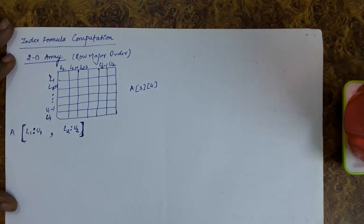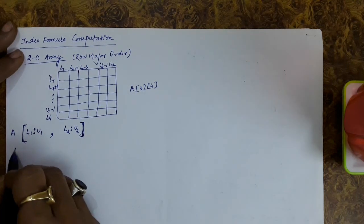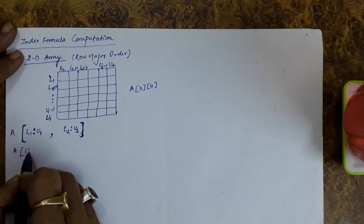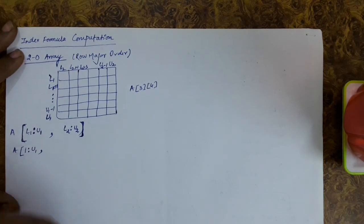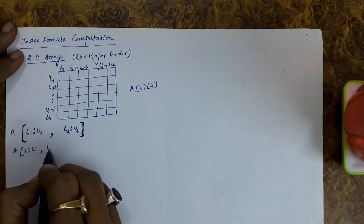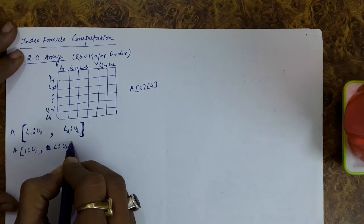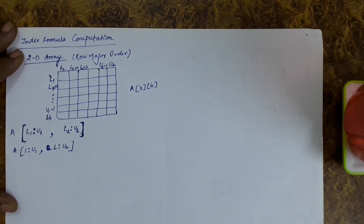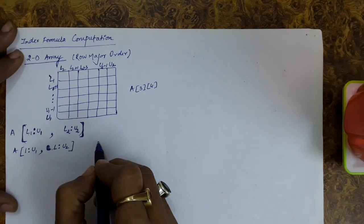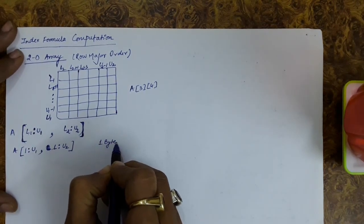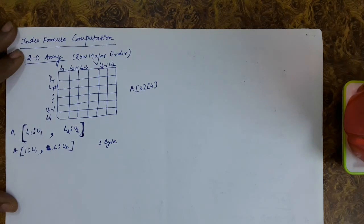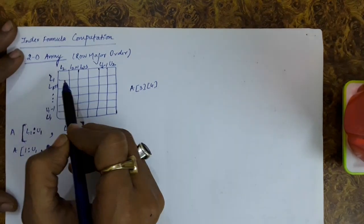For simplicity, we will first assume that the first row index is 1 and the last is U1, and similarly the first column index is 1 and the last is U2. We will also assume that there is one byte of storage per element. We will remove these assumptions later.